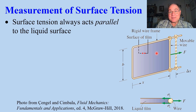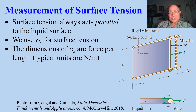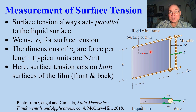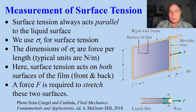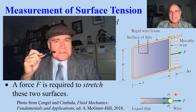Here's a rig set up to measure surface tension. We use the symbol sigma s for surface tension. The dimensions of surface tension are force per length — typical units are newtons per meter. Surface tension acts on both the front and back surfaces. When you pull this wire, a force is required to stretch the two surfaces. If you measure F and b, you can easily calculate sigma s.